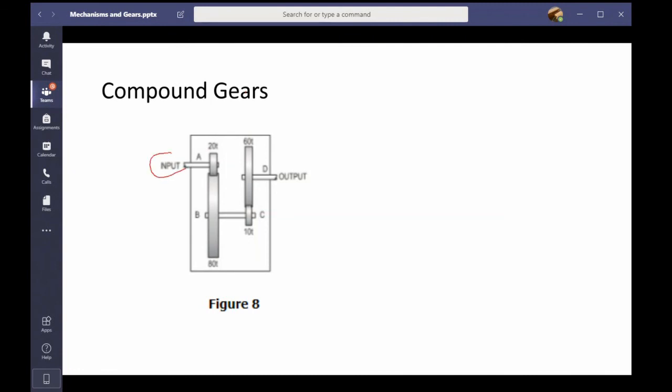What you've got here, we've got an input and there you've got 20 teeth and you've got one that should be 80 teeth. And then it goes across to this, it's attached to this one, we've just got a wee bit of a space here so you can see a bit clearly. It's a 10 teeth one and a 60. So I've got driver A is driver and then B is driven.